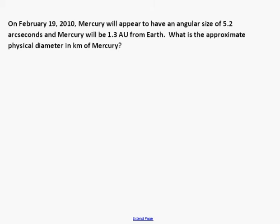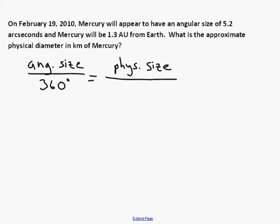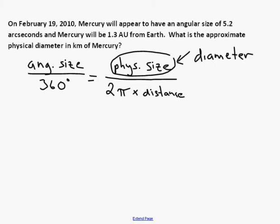The equation that we're going to be using to work on this is from your book and it says that the angular size divided by 360 degrees is equal to the physical size divided by 2 times pi times the distance. The physical size is the diameter. So the first thing I'm going to do is rearrange this equation so that the physical size is by itself on one side of the equation.